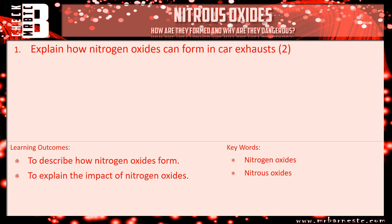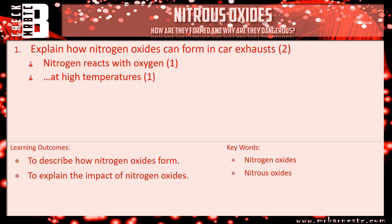Explain how nitrogen oxides can form in car exhausts. The first thing to remember is nitrogen reacts with oxygen — and in what conditions? High temperatures. So one mark for nitrogen reacts with oxygen, and one mark for high temperatures.